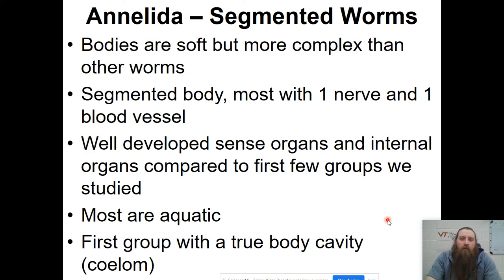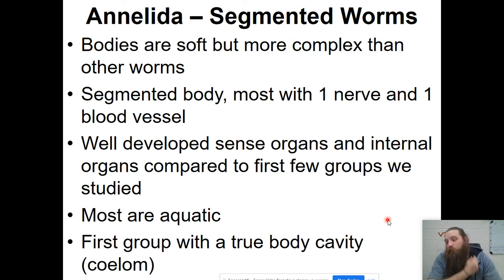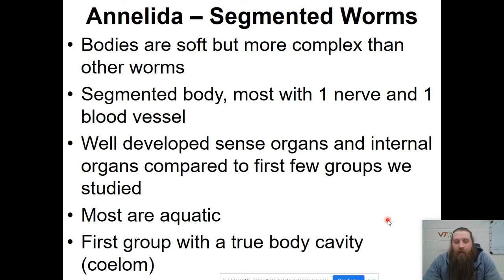Moving on — the next worm is the segmented worm, the Annelida. Their bodies are soft just like the other worms, but they're much more complex. They have segments, and each segment has a nerve ending and a blood vessel present. They have really well-developed sense organs compared to the other organisms we've looked at so far. A lot of them live in the water, and these have true body cavities — these are coelomates.